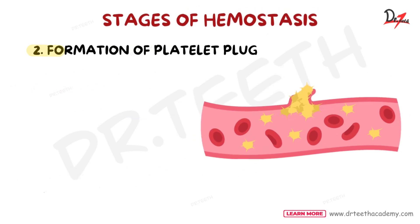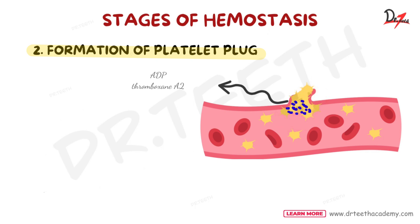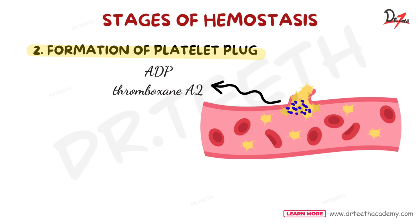Then we have formation of the platelet plug. Platelets stick together at the injury site and release substances like ADP and thromboxane A2, which attract more platelets and activate them. Together they form a loose temporary plug that seals the wound. The platelet activating factor PAF helps in this process.